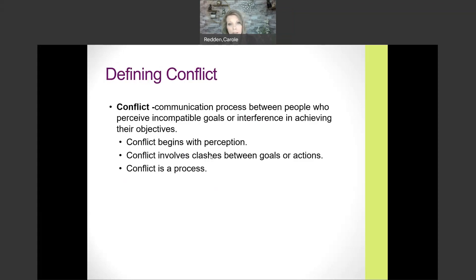The definition of conflict, as you see from your textbook, has to do with it being a communication process between people — not internal conflict, but at least two people who perceive incompatible goals or interference in achieving their objectives. When there's a conflict, if you can figure out which of those variables is the cause, then you know how to solve it. It begins with perception.